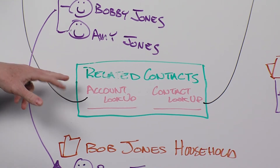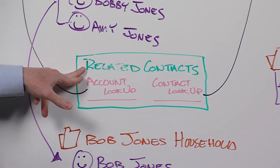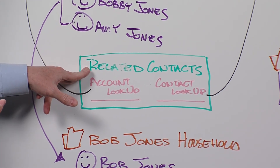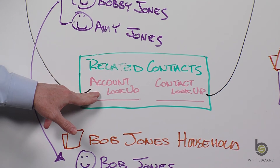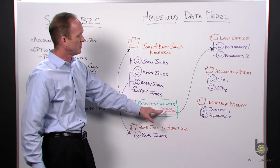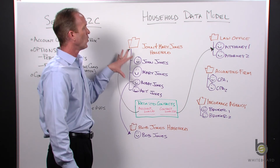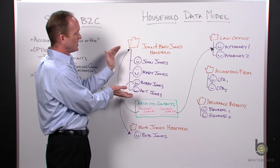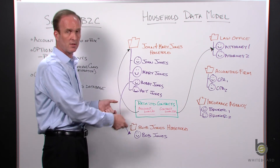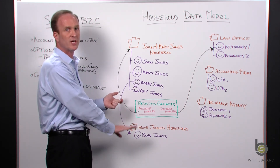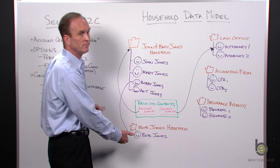To track these relationships, a best practice is to create a custom object called related contacts — sometimes called affiliated contacts, professional contacts, or in wealth management, COI (center of influence). It's a simple custom object with a lookup to the account (the household) and a lookup to the contact. Looking at the household record, you'll see one related list for contacts who live there, and another related list showing all the professional relationships — the CPA, attorney, insurance broker, personal banker, and so on.